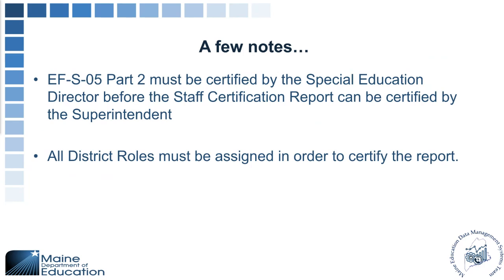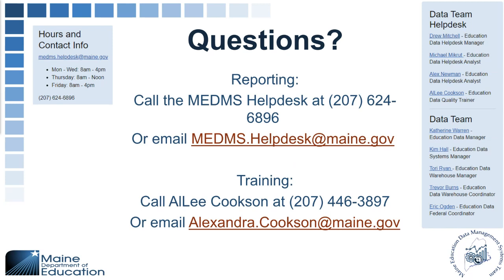A few quick notes to wrap up: the EFS05 Part 2 needs to be certified by the special education director before the staff certification report can be certified by the superintendent. All district roles must be assigned in order to certify the report. Also review the details report to make sure everything that needs review has been addressed. This report is due on October 30th, so please make sure all staff assignments are in by October 30th.